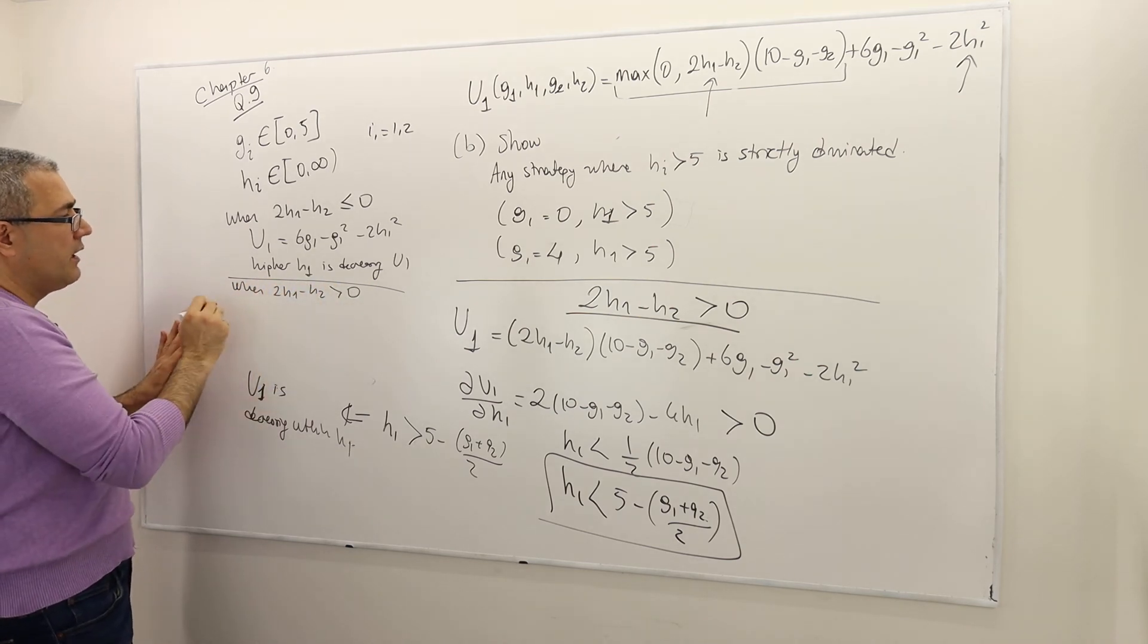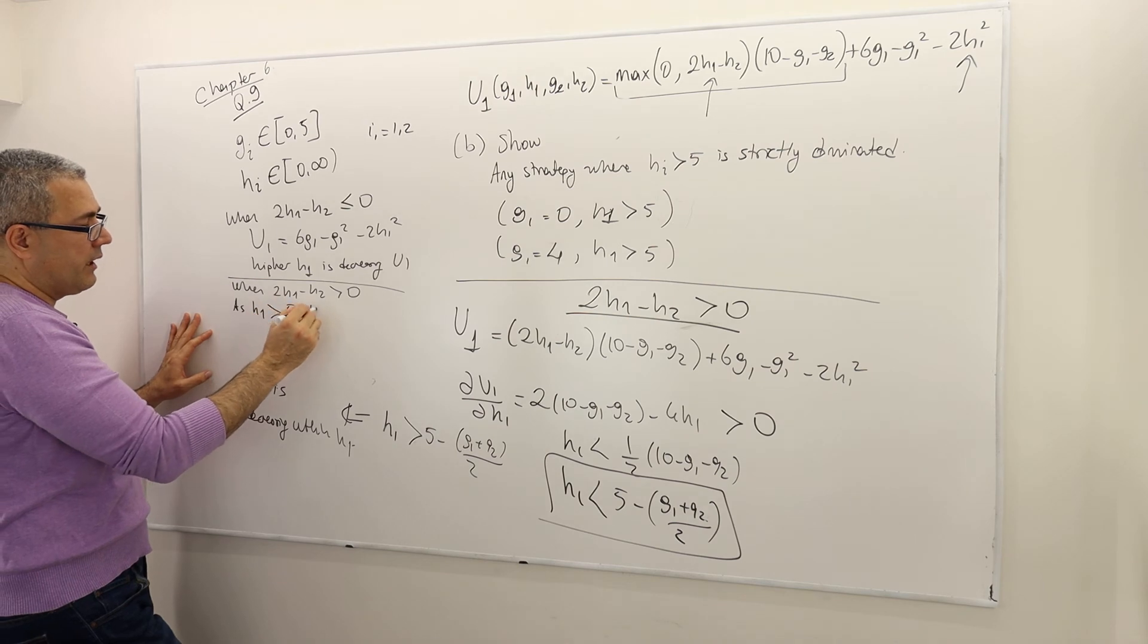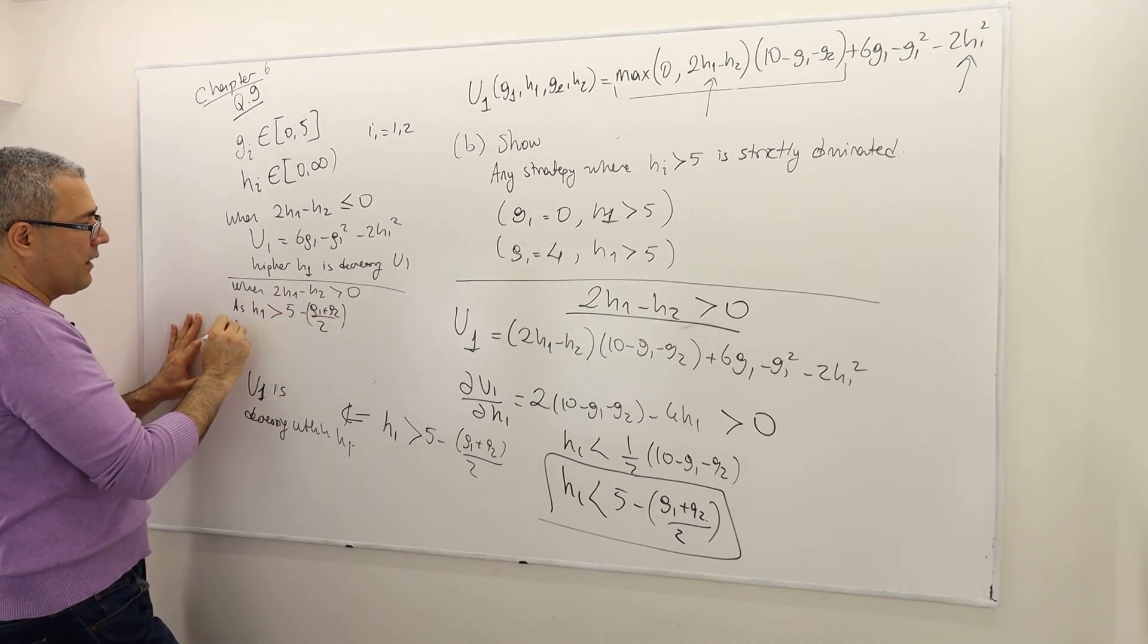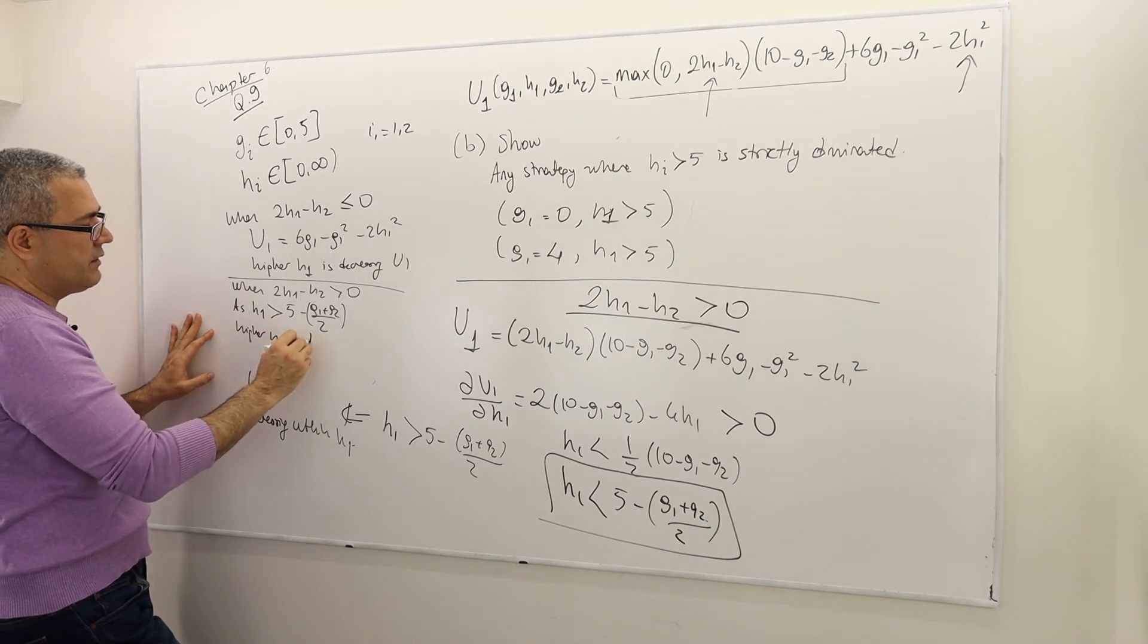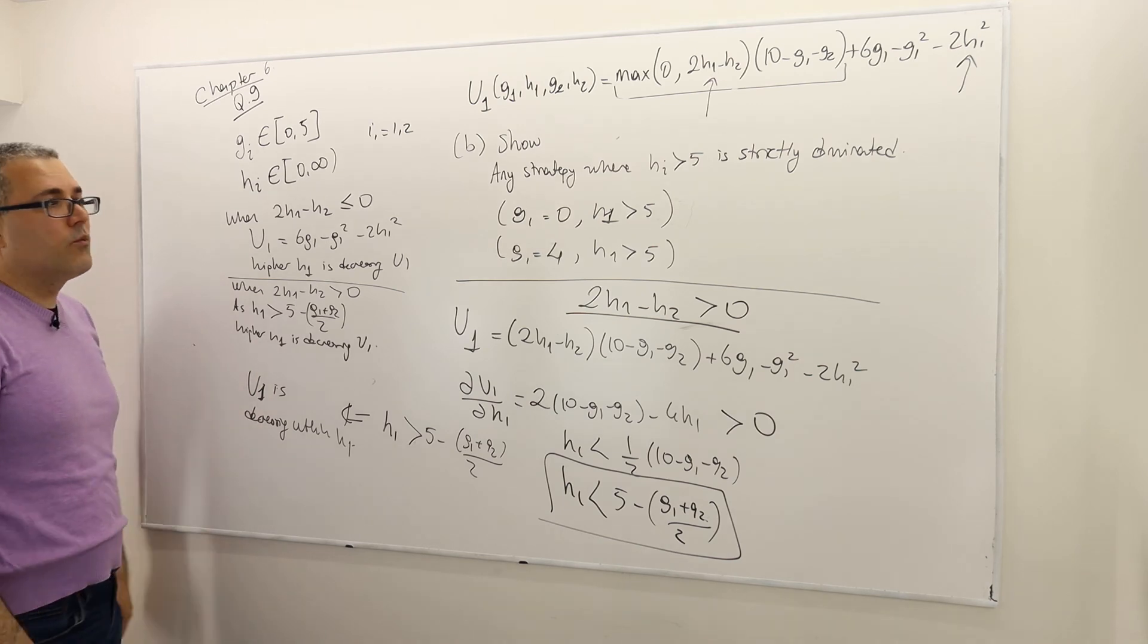as H1 greater than 5 minus G1 plus G2 divided by 2, higher H1 is decreasing U1.